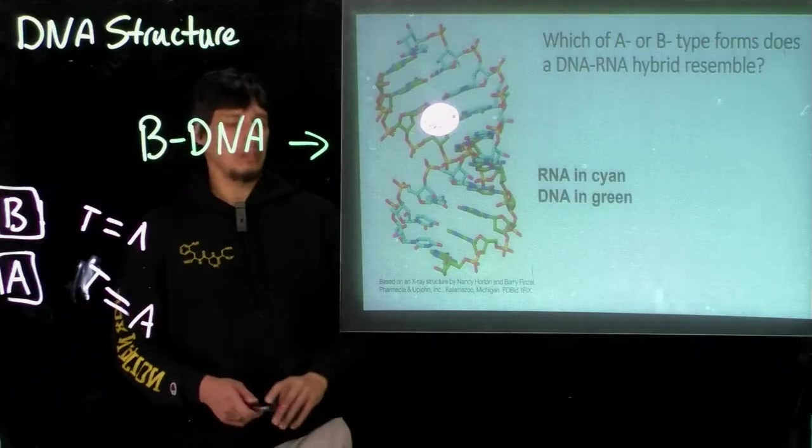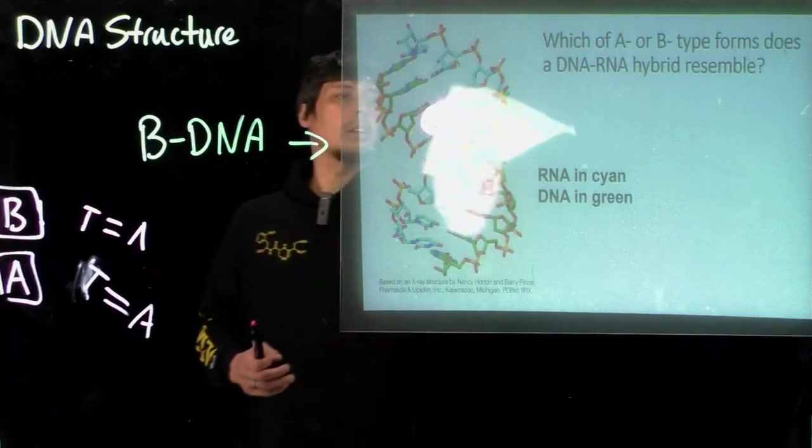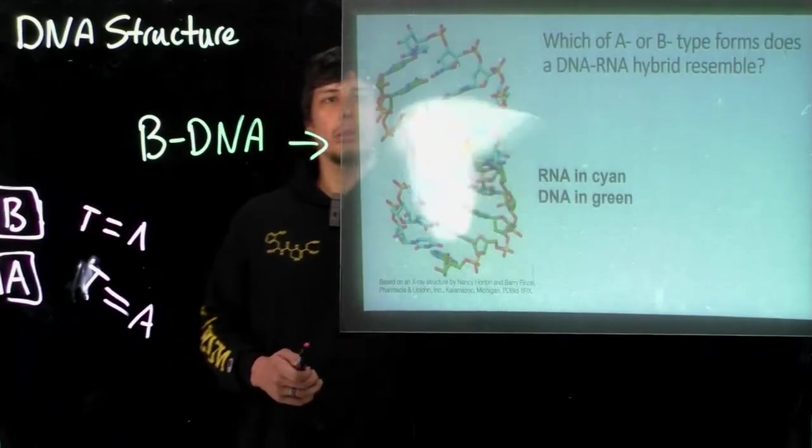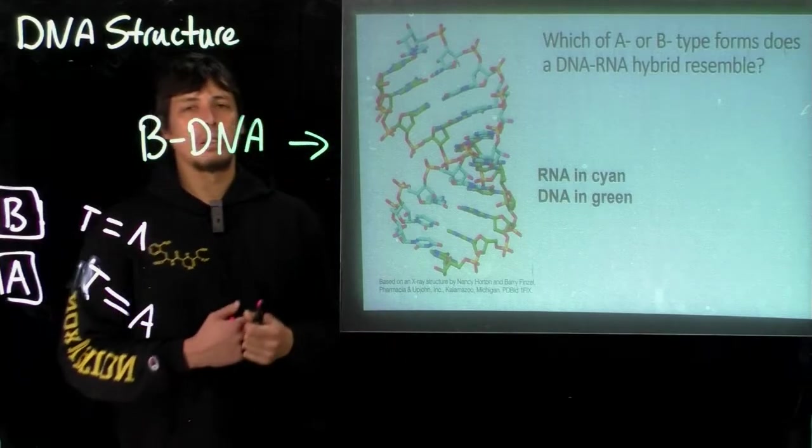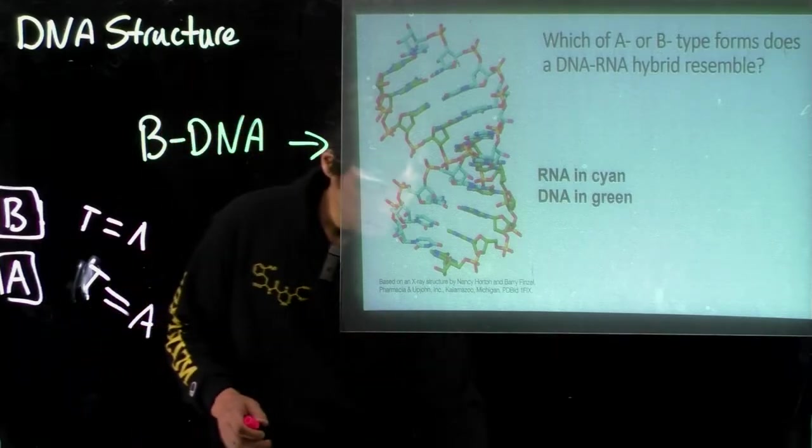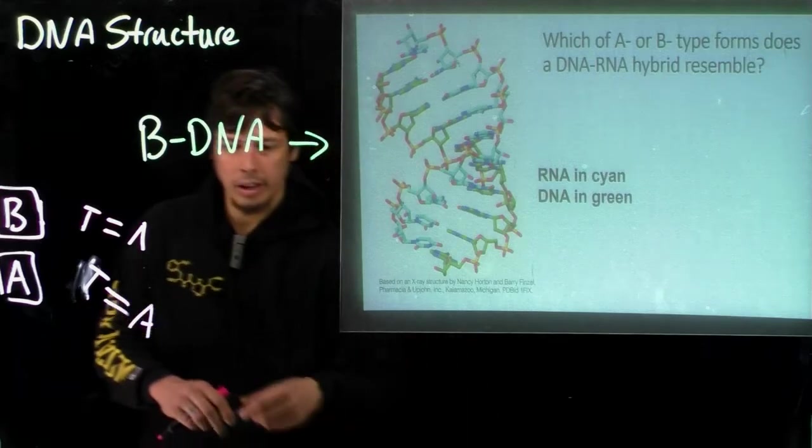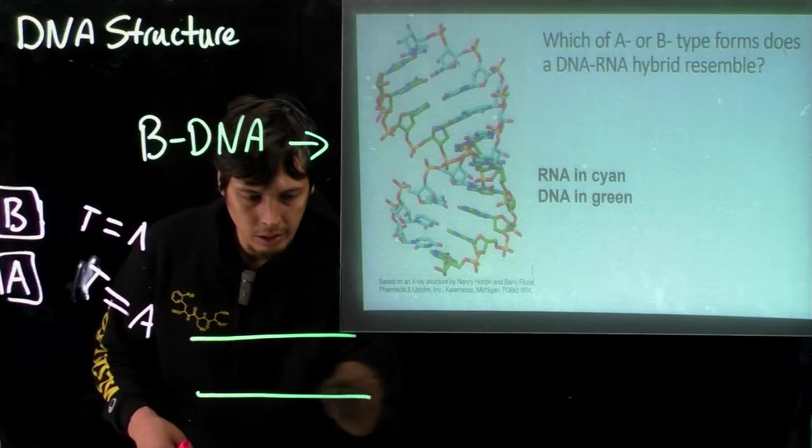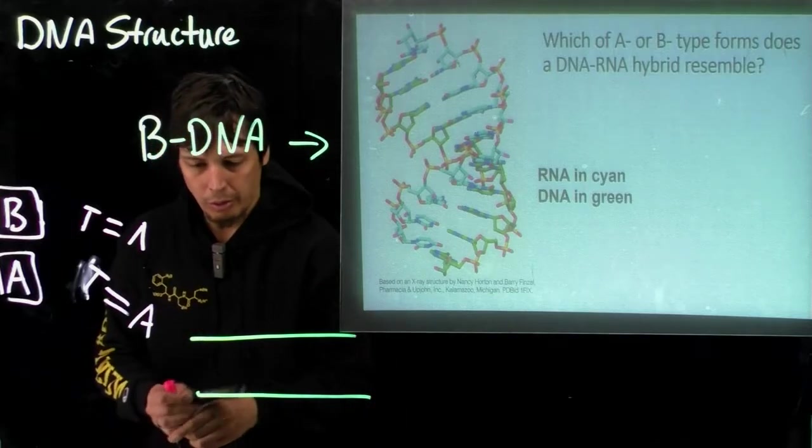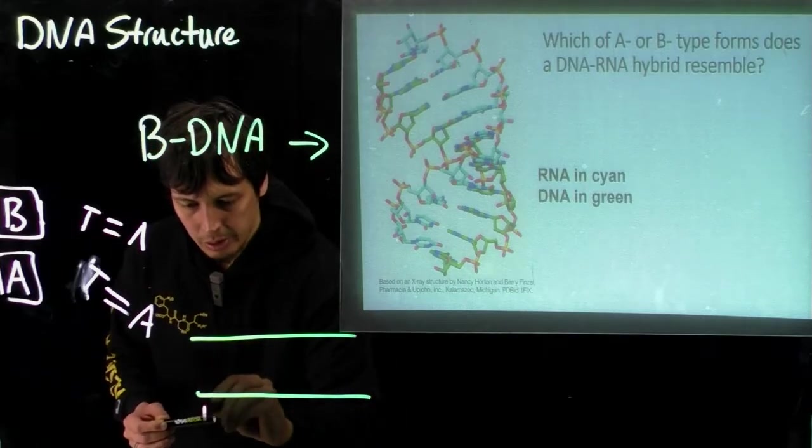And so this also goes for RNA. So remember, RNA has to form a hybrid with DNA during transcription. So the RNA, for instance, we have DNA, and we have our strand here, and we're undergoing transcription here now.